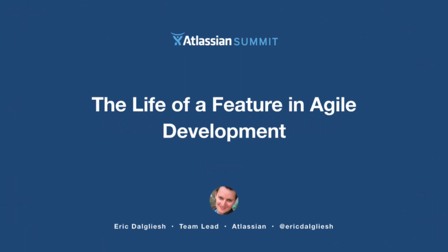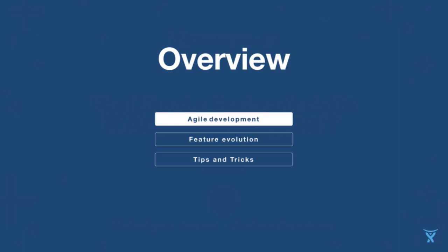Hi, I'm Eric Dalgleish. I've been at Atlassian for about six and a half years, and I've been on the Jira team lead for the last probably two, and before that I was on the on-demand team building what we now market as our cloud products. Today I'm going to be talking about three main things: first, an overview of Agile development for people who aren't necessarily familiar with it, and how we develop software.